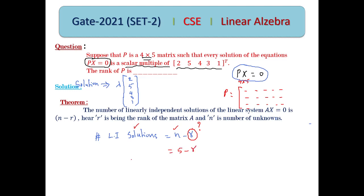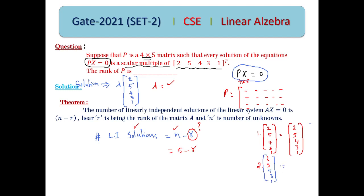The solutions for different values of λ: for λ = 1, the solution is [2, 5, 4, 3, 1]ᵀ. For λ = 2, the solution is 2·[2, 5, 4, 3, 1]ᵀ = [4, 10, 8, 6, 2]ᵀ. We can generate infinitely many solutions this way.